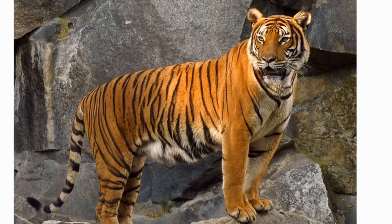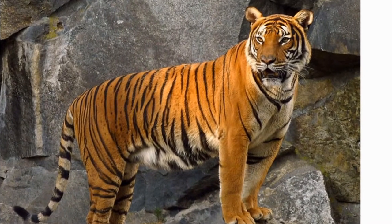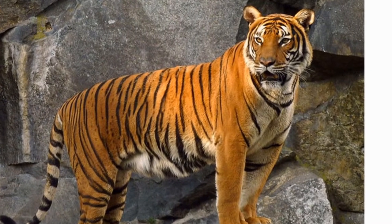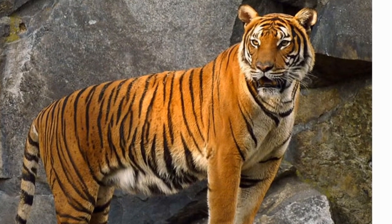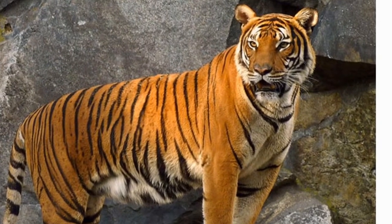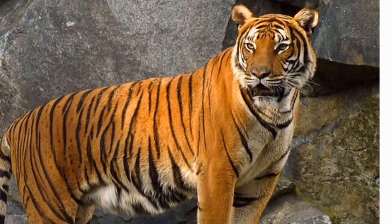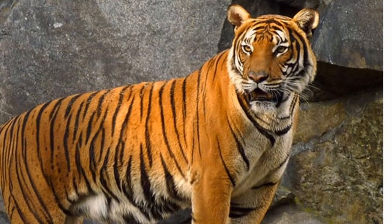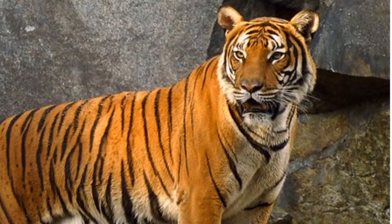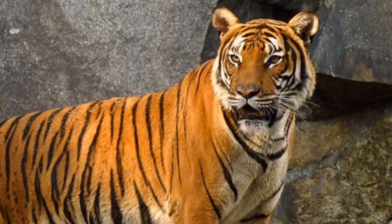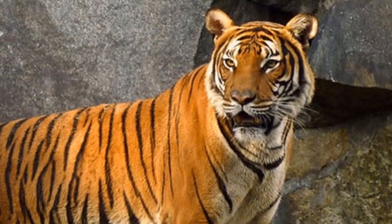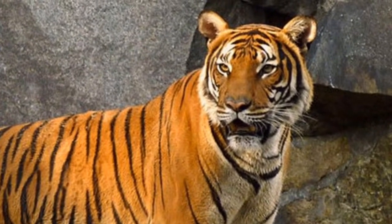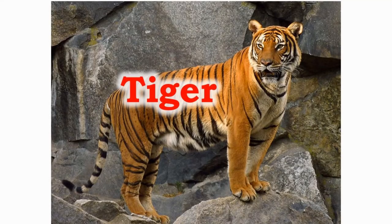The tiger is the largest and strongest cat of the cat family. It has the second largest brain among the carnivores. They use roars to communicate with other tigers. Unlike other big cats, they are adept swimmers. They are found in Asia and Russia.